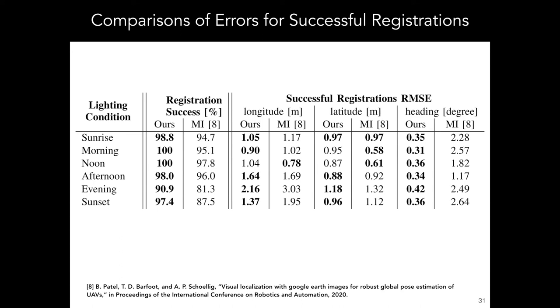Compared with the mutual information approach, we are able to achieve very similar results for the longitude and latitude. The largest improvement here comes in the evening and sunset runs, where we see an increase in 10% of the success rate, but a decrease around half a meter in the errors.